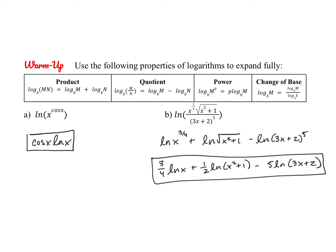Just remember when you're expanding a logarithm, any values that are in the numerator will end up as positive logarithms, and any values in the denominator end up as negative logarithms. Also note you cannot expand the logarithm of a sum — it only works for the logarithm of a product or of a quotient.